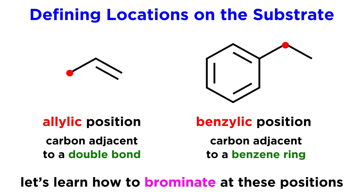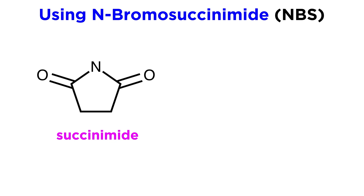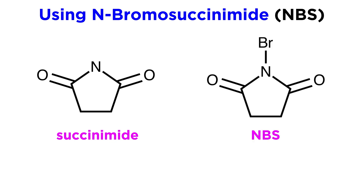The kind of bromination we will be performing will involve placing a bromine atom specifically at these locations. The reagent we will be using to achieve this is called N-bromosuccinimide, or NBS for short. Structurally speaking, succinimide looks like this, and N-bromo refers to the presence of a bromo group on the nitrogen atom, so this is N-bromosuccinimide.